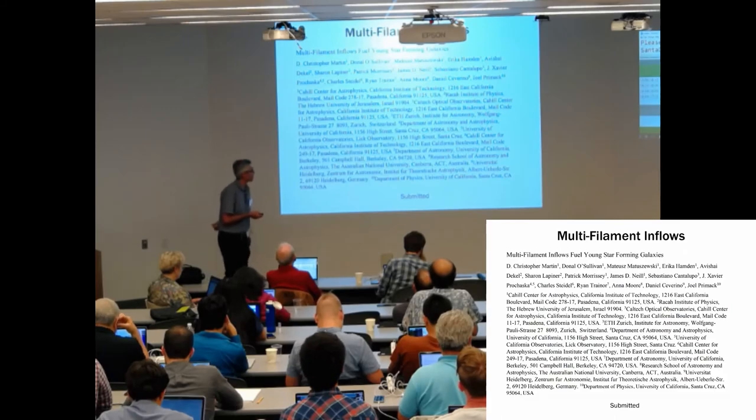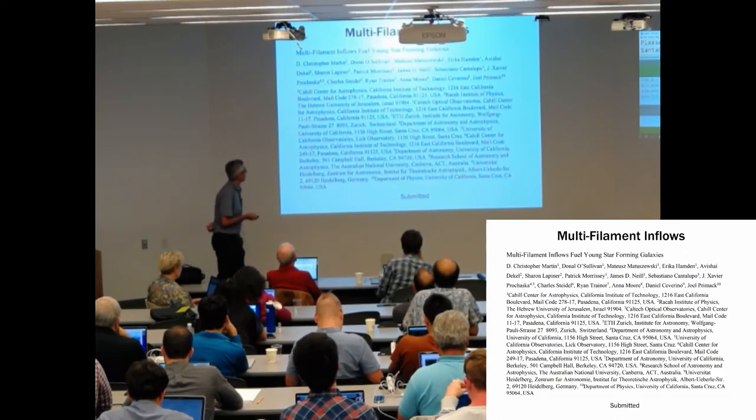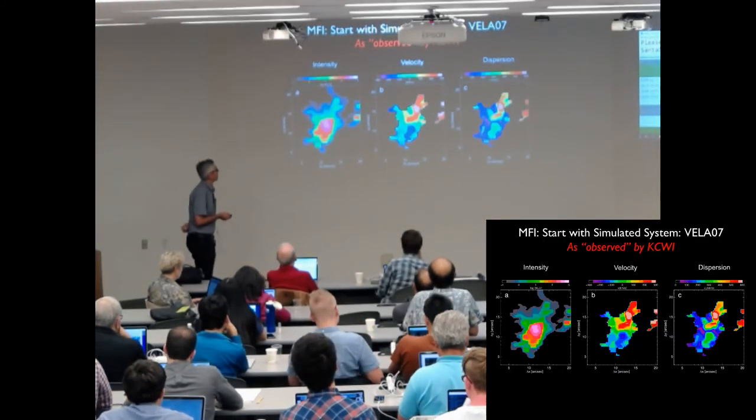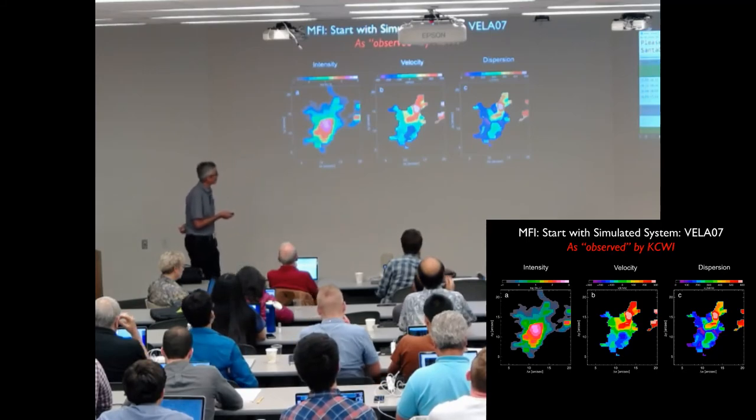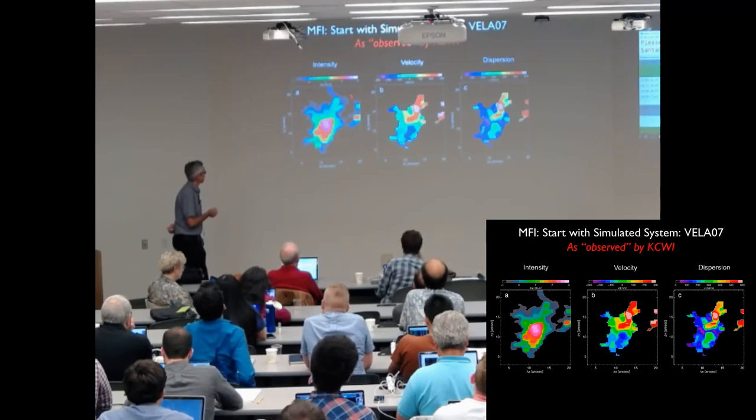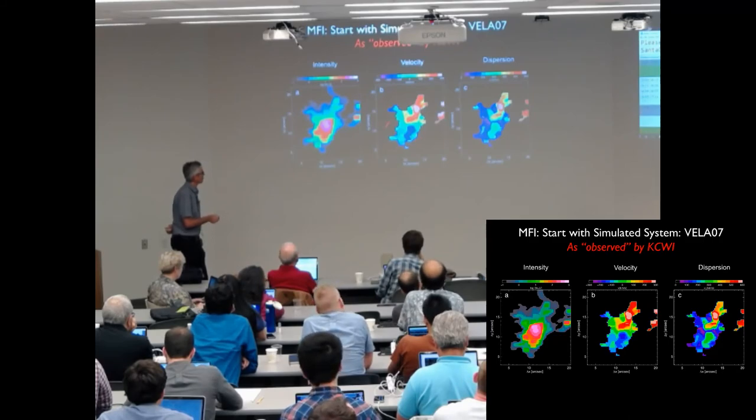We have just submitted a paper saying how we're going to do that, or how we have done it. And hopefully it'll be accepted soon. So this is a simulated galaxy called Vela, from the Vela simulation, Vela 07. This is what KCWI would see in emission, in velocity, in the dispersion. And I'm going to focus on the velocity maps now.